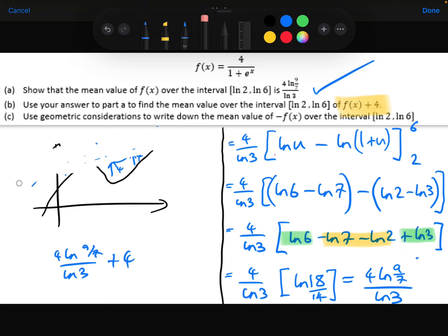Similarly, for part C, use geometric considerations, which is what we're doing here. We're not doing algebra, we're not doing calculus, we are just thinking about it graphically. Using geometric considerations, write down the mean value of minus f(x) over the same interval. Well, all that minus does is reflect it in the x axis. All of the positive values become negative or the negative values become positive. So all that will do is it will change my mean value to be minus 4 ln 9 over 7 divided by ln 3.